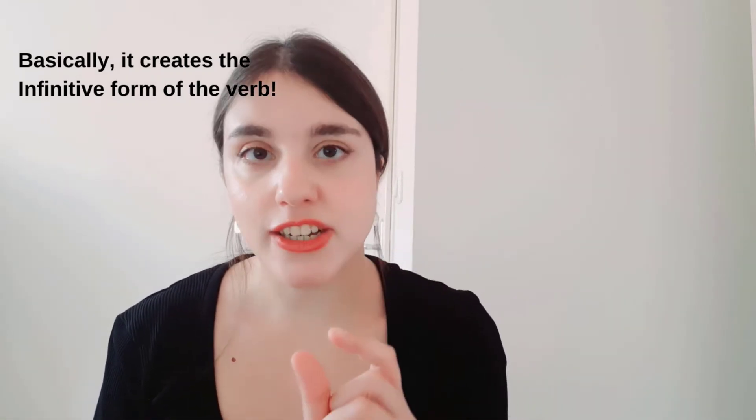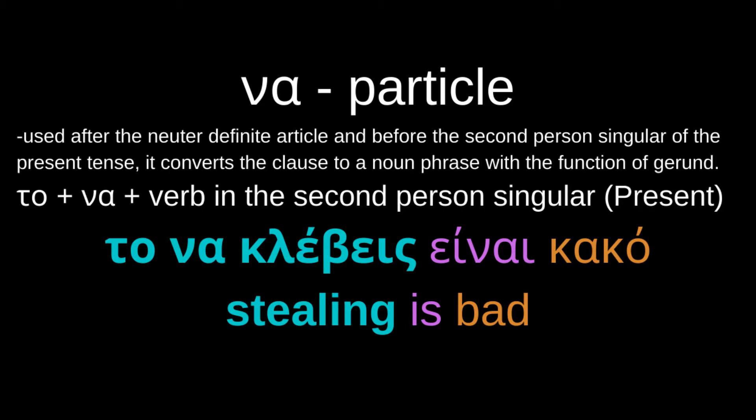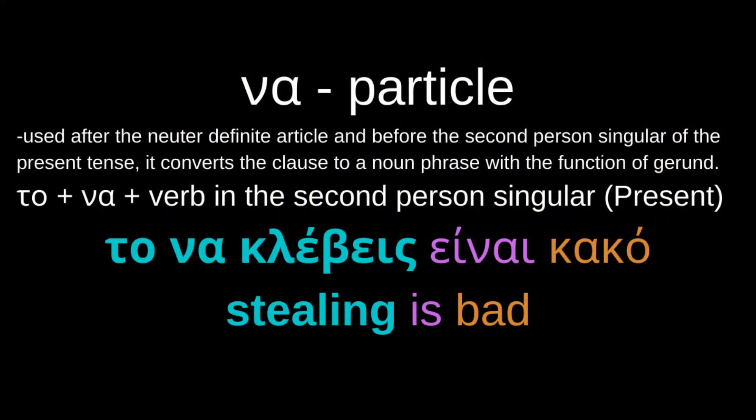Sometimes if we add an article, then ΝΑ, then a verb, we can turn this verb into a noun and it acts as a gerund. Let me give you some examples — I understand it sounds a little bit complicated. ΤΟ ΝΑ κλέβεις είναι κακό — Stealing is bad. The verb κλέβω means to steal. We added ΝΑ before the verb and the definite article ΤΟ in the neutral gender: ΤΟ ΝΑ κλέβεις — stealing.